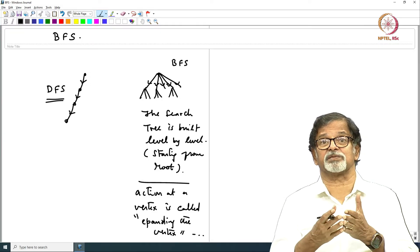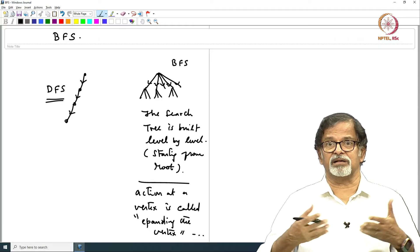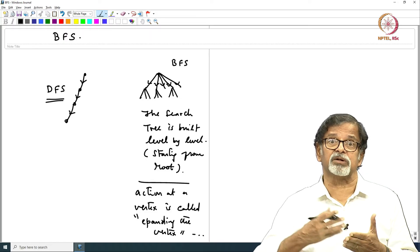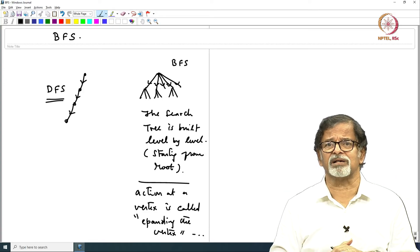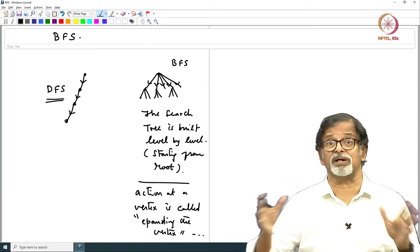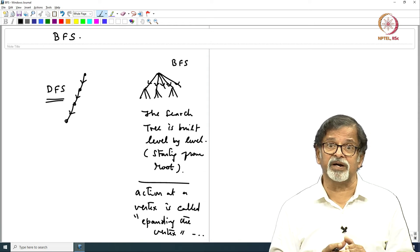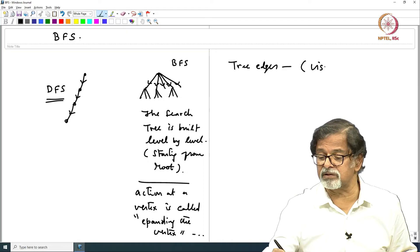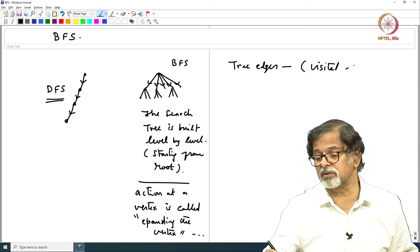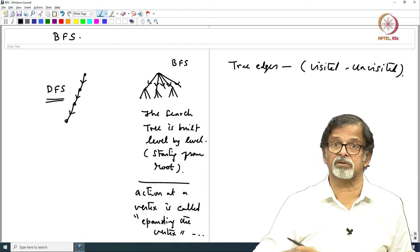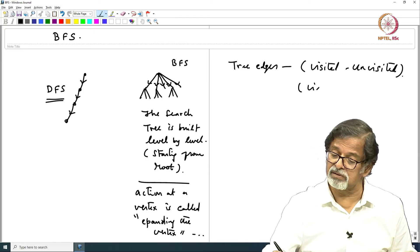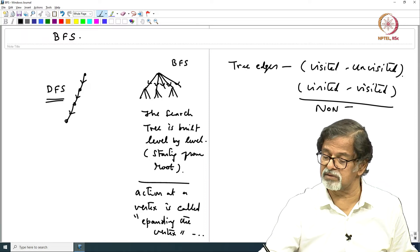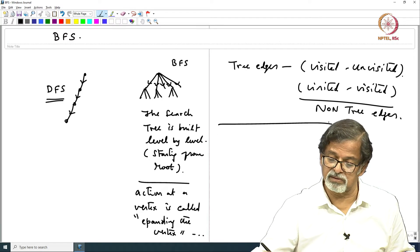This is extending the chain, this is expanding a vertex. You go to the next level and obviously you want to visit only the nodes that are not visited. When you are expanding, you would expand only to the nodes that are unvisited. If it is visited, those visited neighbors are ignored and those edges become non-tree edges. Tree edges go from visited to unvisited or non-visited.